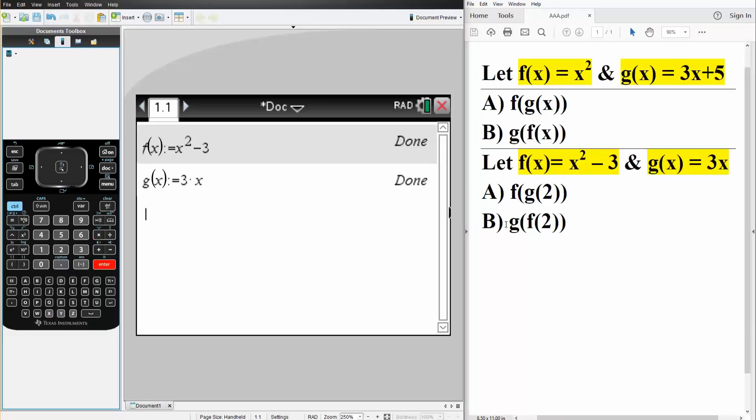And now we want to do f parentheses g2. Simple, f parentheses g parentheses 2. So it looks identical, right? Hit enter. And the answer is 33.